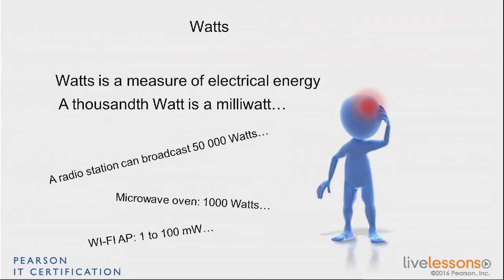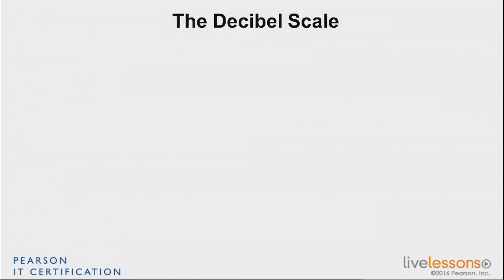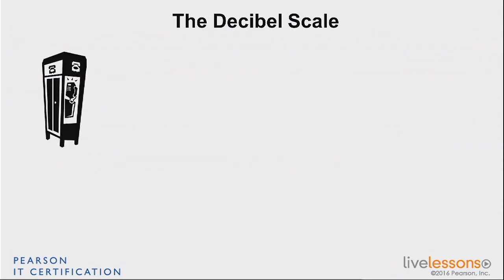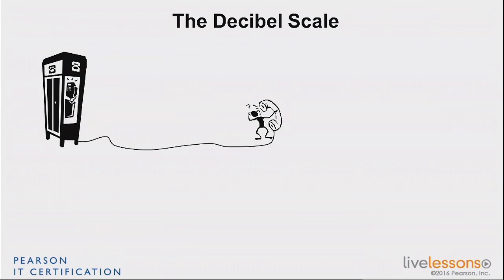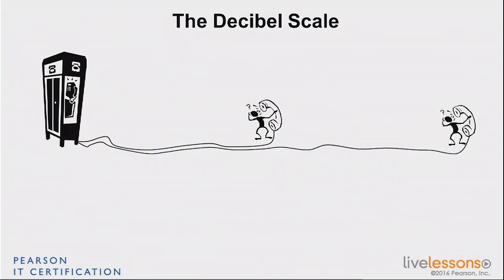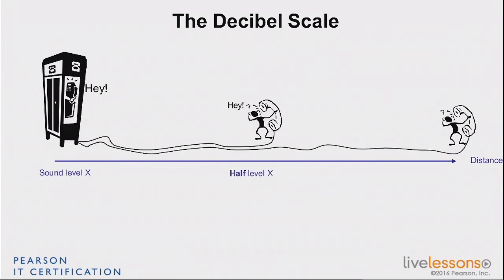The second thing you need to be aware of is the decibel scale, because we'll be using it a lot. It was invented more than a century ago by Bell Labs. They were designing phone systems — sending voice sounds into an amplifier over a wire — and they wanted to determine how far down the line could you still hear the sound clearly. They measured in halves: where is the point where you lose half the energy, then half again? That gave them the decibel scale.